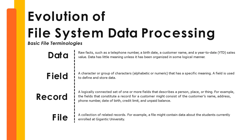Let us get acquainted with some basic file terminologies. First, we have data — raw facts such as telephone number, birth date, customer name, and year-to-date sales value — which have little meaning unless organized in some logical manner. Next is a field: a character or group of characters, either alphabetic or numeric, that has a specific meaning and is used to define and store data. Next is a record: a logically connected set of one or more fields that describes a person, place, or thing — for example, a customer record might include the customer's name, address, phone number, date of birth, credit limit, and unpaid balance. And lastly, a collection of records forms a file — for example, a file might contain data about students currently enrolled at Gigantic University.